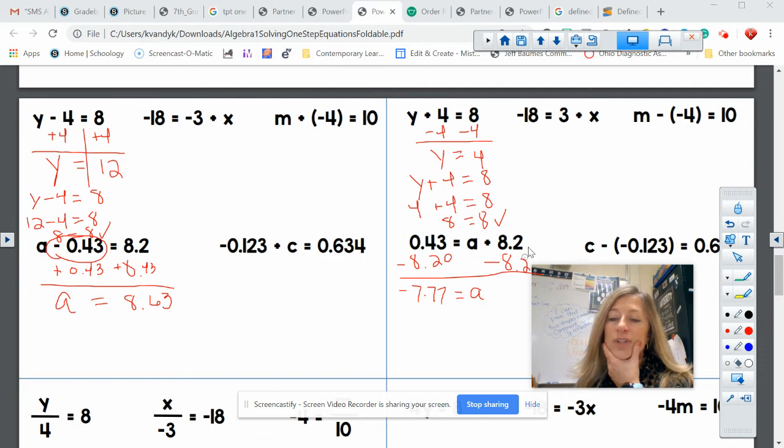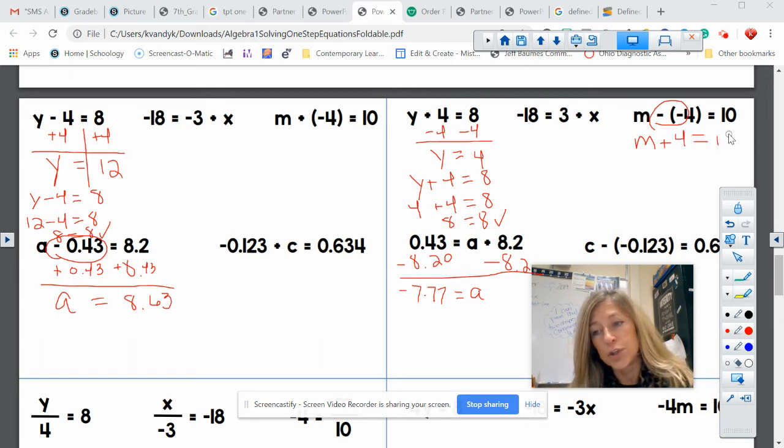Now, I think we should probably try this one here. What happens when I'm subtracting a negative? It becomes plus, becomes positive. So really, this problem is M plus four equals 10. So now I've just gotten you started with this. I'd like to see that you can do it on your own. And I'm actually going to go back over here for a second. If I'm adding a negative, that's the same thing as what? Subtracting. So make sure you've set that up first. Your integer rules are constantly coming back to haunt us. So make sure you know those integer rules.